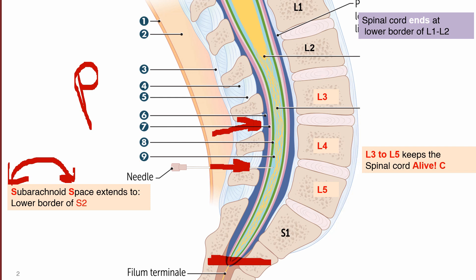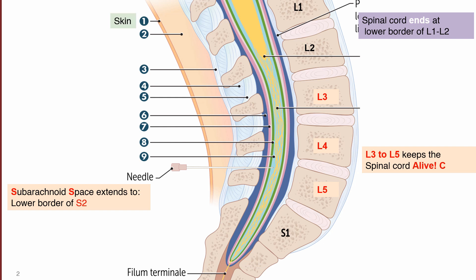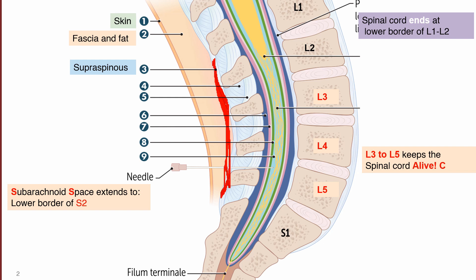The first layer the needle will deal with is the skin, which will be followed by fascia and subcutaneous fat. We will then encounter three ligaments of the vertebrae. First, the supraspinous ligament, which connects the spinous processes of the vertebrae. Then the interspinous ligament, between the two spinous processes. And finally the ligamentum flavum.